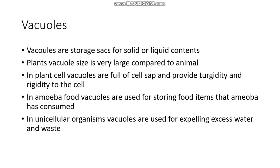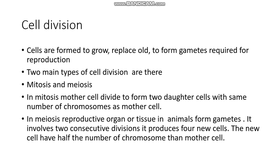Each cell organelle has specific functions: mitochondria helps in energy production as the powerhouse of the cell; endoplasmic reticulum helps in producing proteins and transporting them; lysosomes help in digesting foreign materials; Golgi apparatus helps in packaging and dispatching substances synthesized near the endoplasmic reticulum; and plastids provide green color to plants. These specific functions together help the cell to survive.